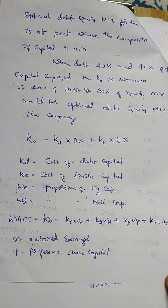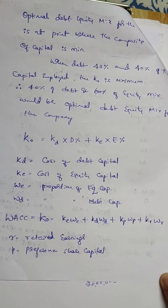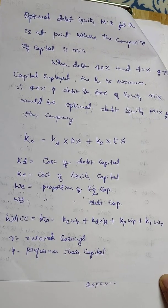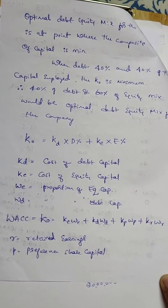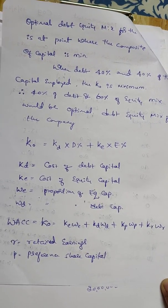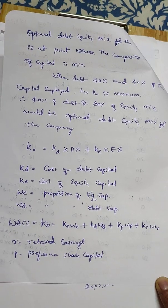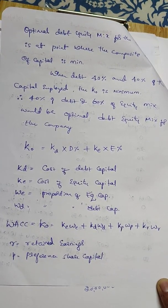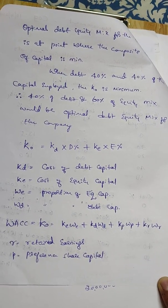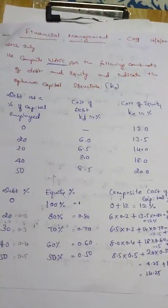WACC — Weight Average Cost of Capital — is equal to the overall cost of capital. The formula is: WACC = KE·WE + KD·WD + KP·WP + KR·WR. So for any equity, preference share capital, debt, and retained earnings, we add each cost multiplied by its weight.